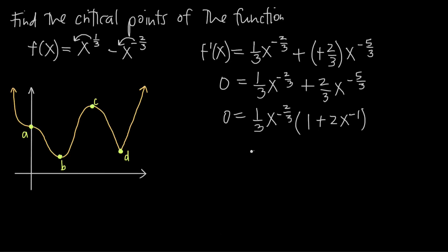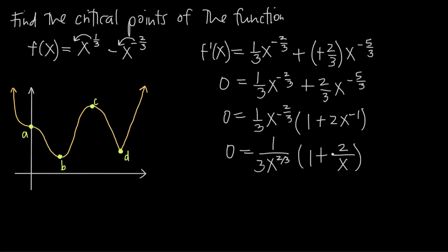Let's rewrite to get rid of negative exponents. Zero equals 1/3 over x to the 2/3, multiplied by (1 plus 2/x). By the zero theorem, we can set each factor equal to zero individually: 1 over (3x to the 2/3) equals zero, and 1 plus 2/x equals zero, and solve each equation separately.